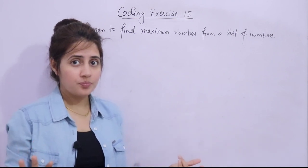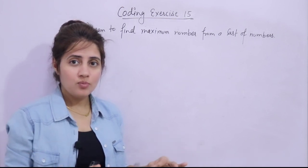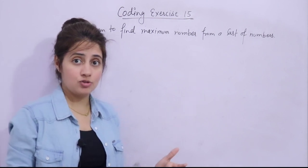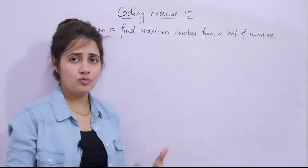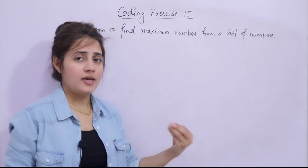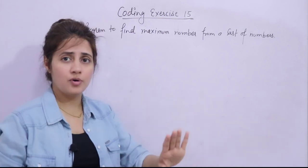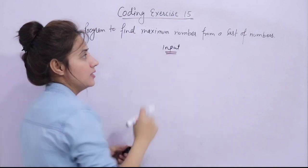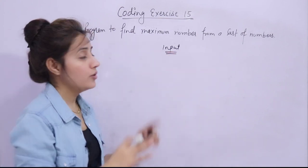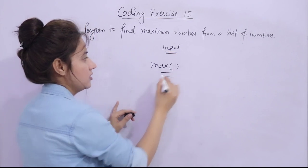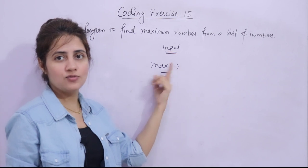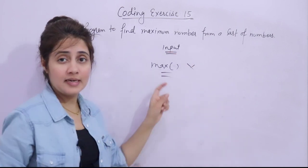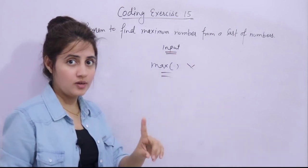The logic to find the maximum number from a list or array is the same as in other languages - only the syntax is different, specifically how to write a for loop and an if statement. That is all you need to know to solve this problem. Now, some hints: first, you will take input using the input function from the user. Second, you cannot use the max() built-in function - even though it exists and automatically gives the maximum number when you pass a list, you have to replicate its functionality using a for loop.